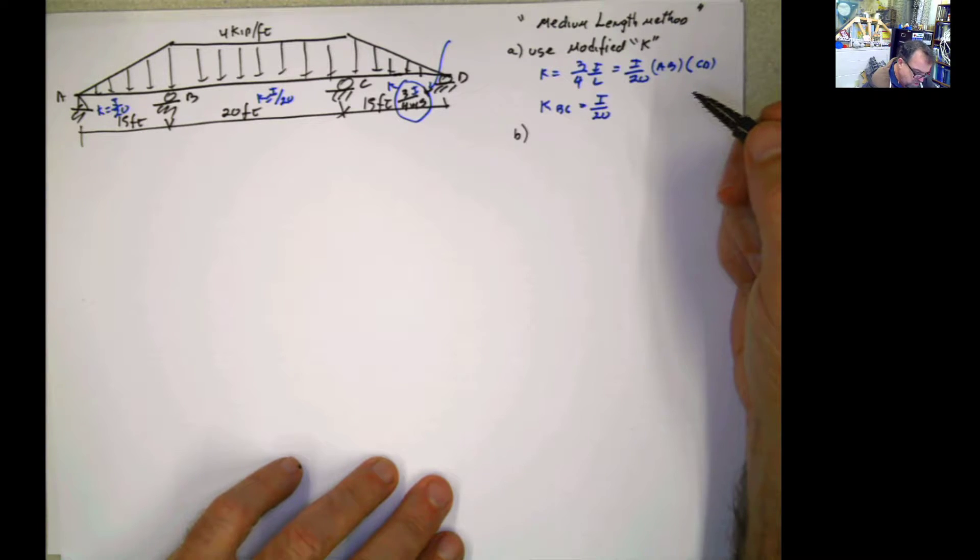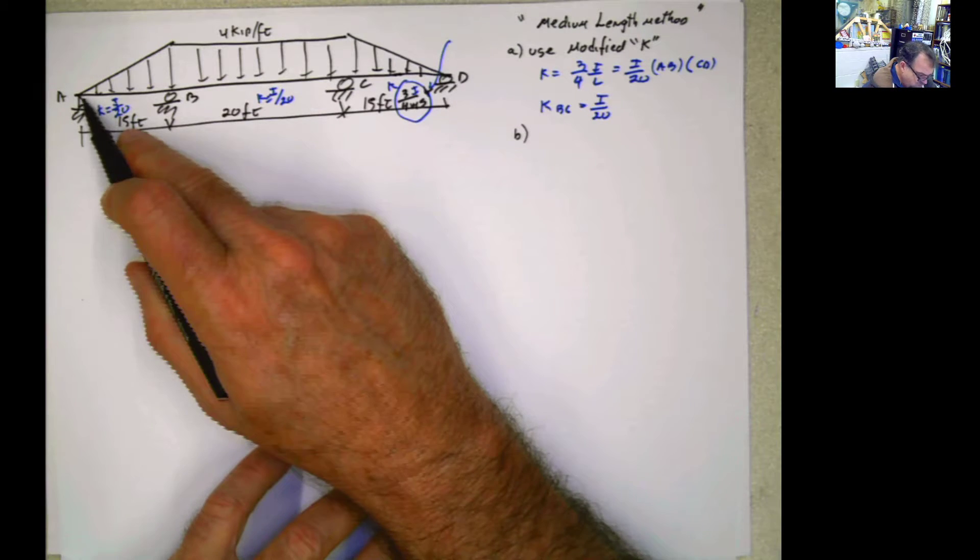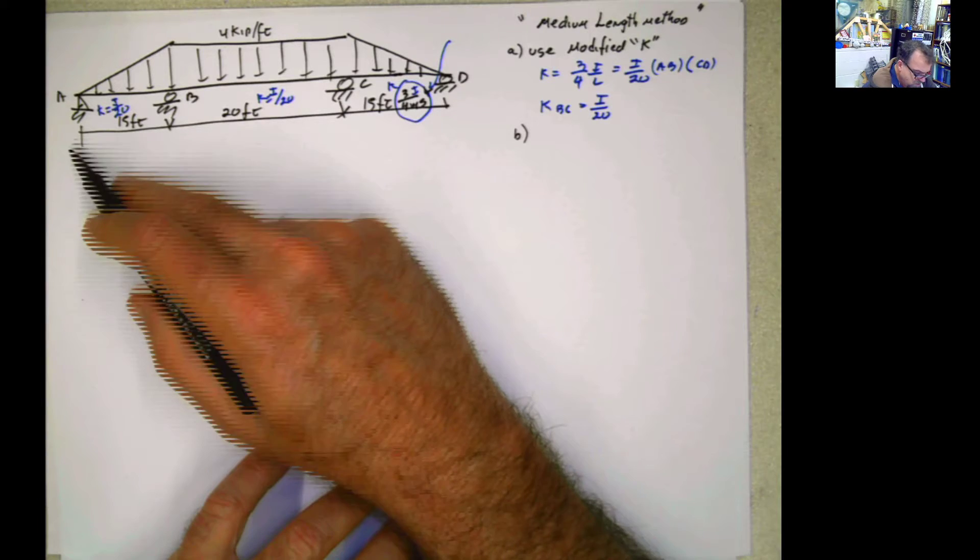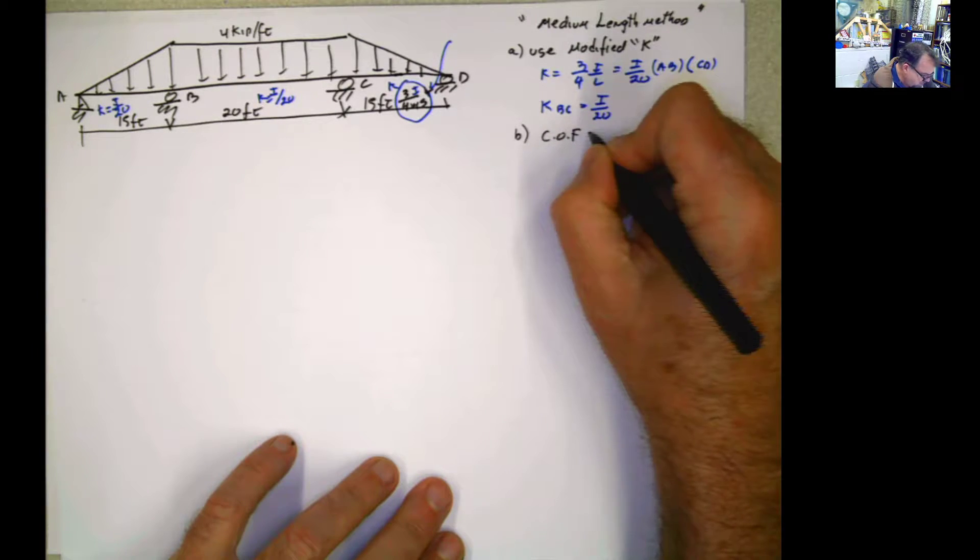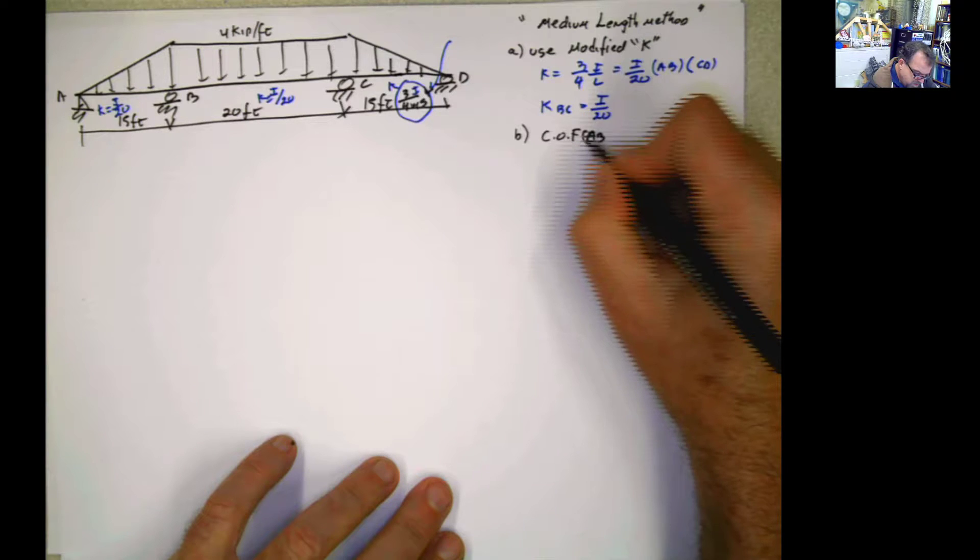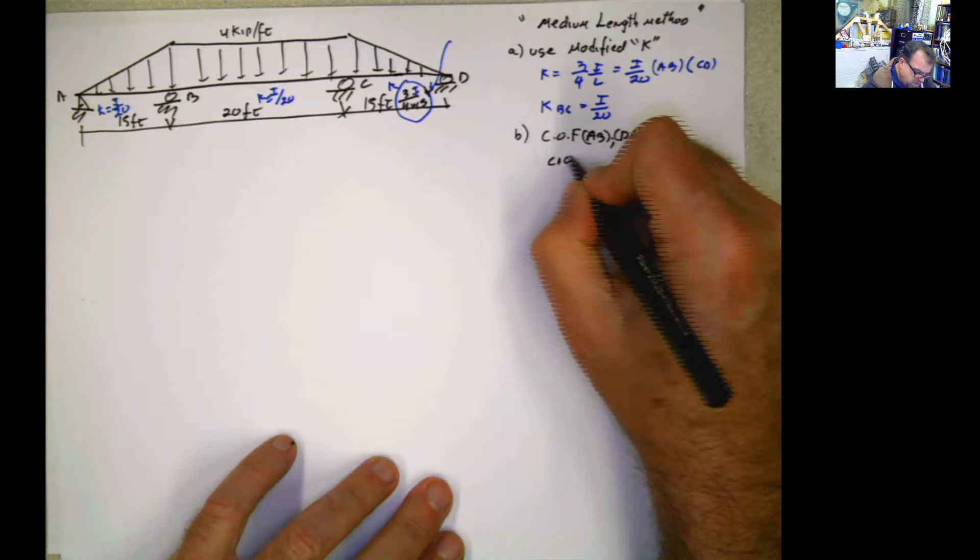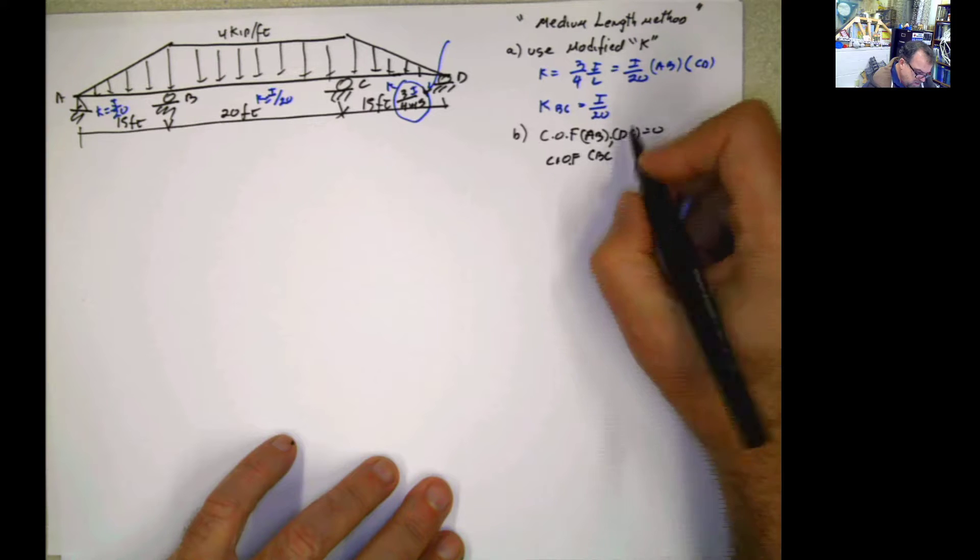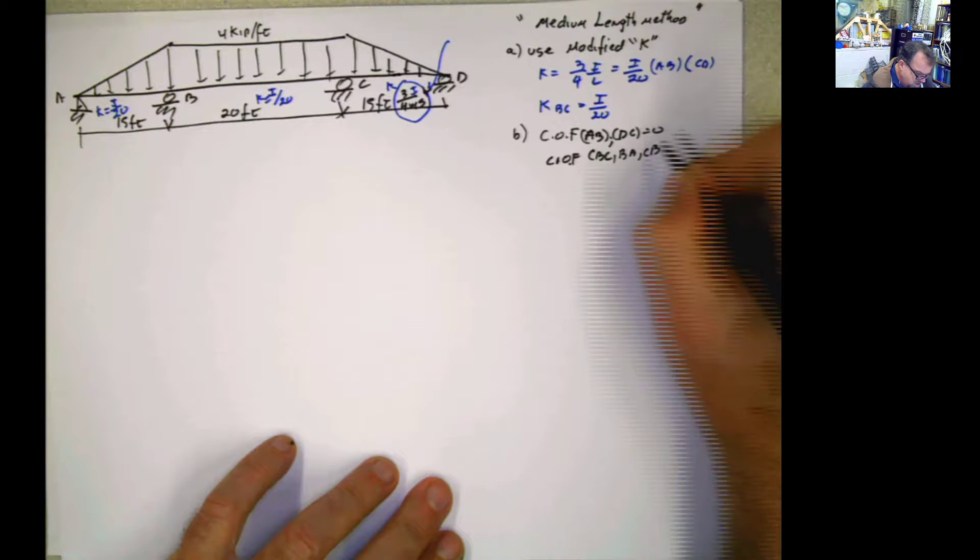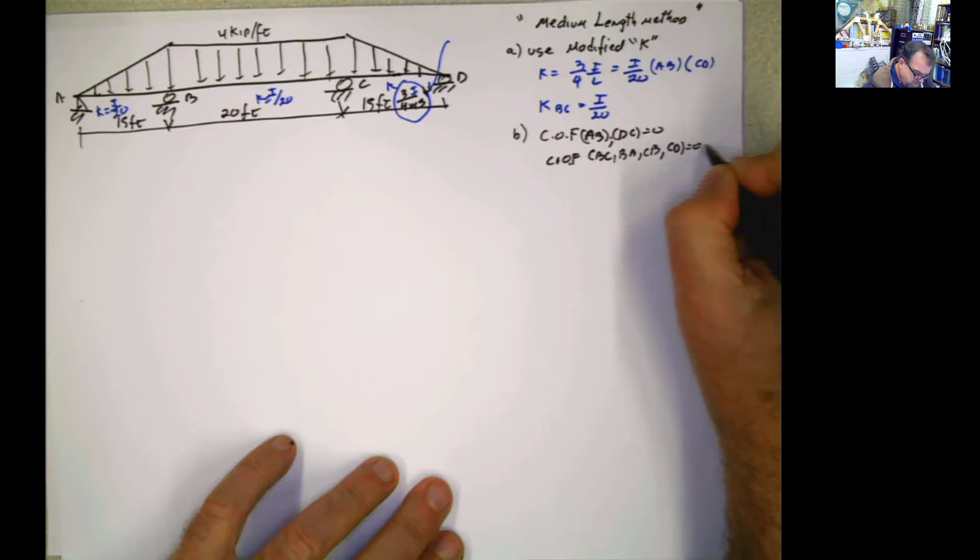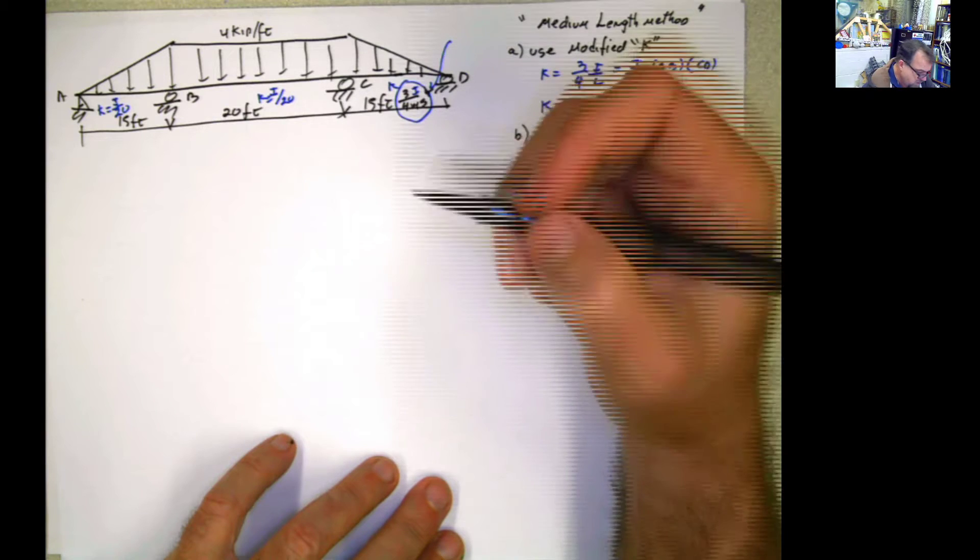Of course, the distribution factors are going to change now because the distribution factor of this one is 1. No problem with that. But the carry-on factor is 0. So carry-on or transmission factor for AB and for DC is 0. For BC, BA, and CB, and CD is 0.5. But from here to here, nothing is going to happen. From here to here, nothing is going to be transmitted. That's another modification we can do.